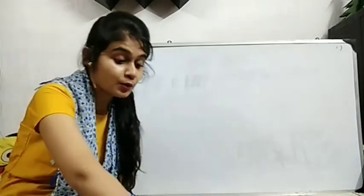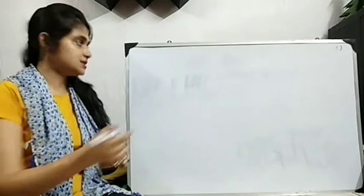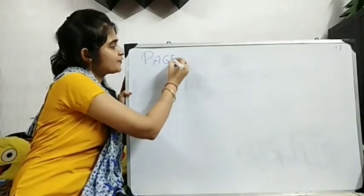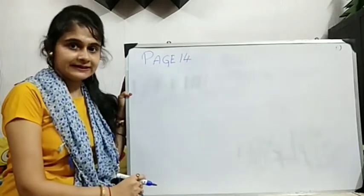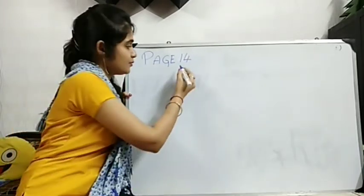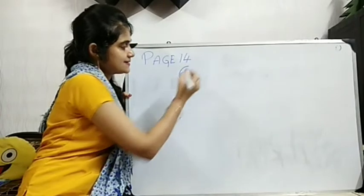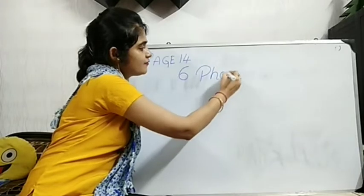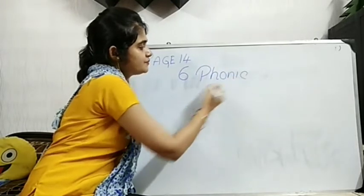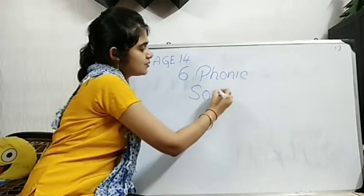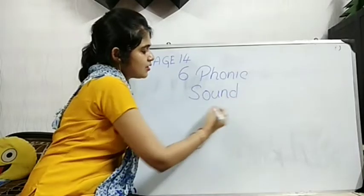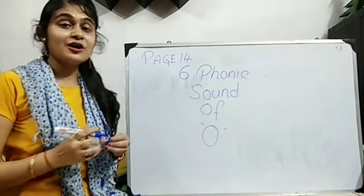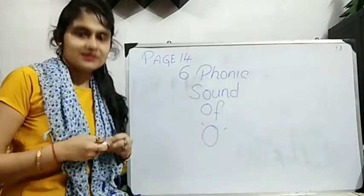You take out page number, open to page number 14. Page number 14, one, four. Clear? Let's start. What is the chapter number? Six. And what we are going to learn today? Phonic. All of you repeat after me. Sound of O. Phonic sound of O.